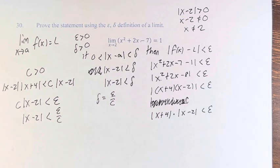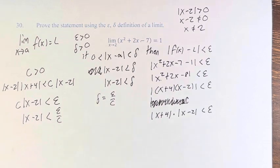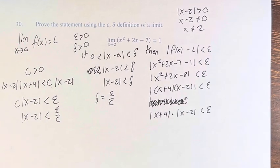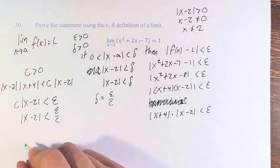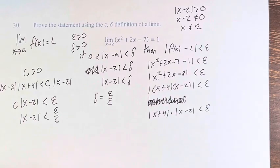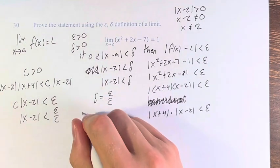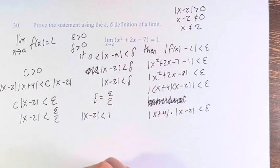However, we don't know what c is, so this isn't super helpful, because we want delta in terms of epsilon concretely without an extra variable. So what we have to do is pick a particular delta. Let's say delta equals 1, so the absolute value of x minus 2 is less than 1.